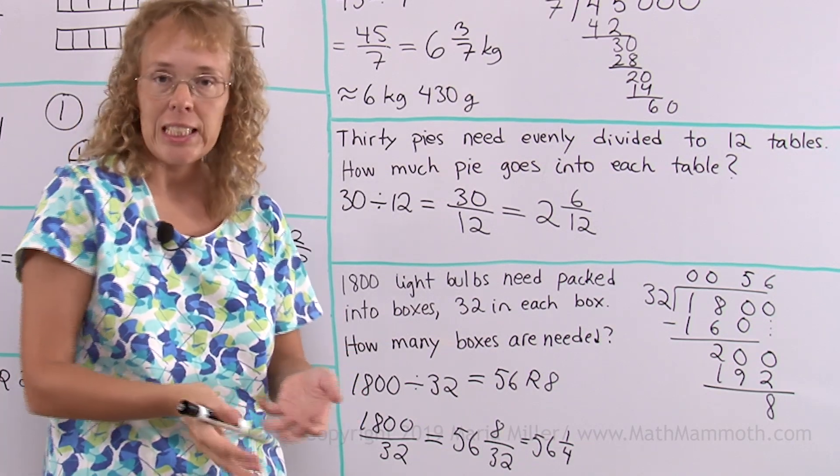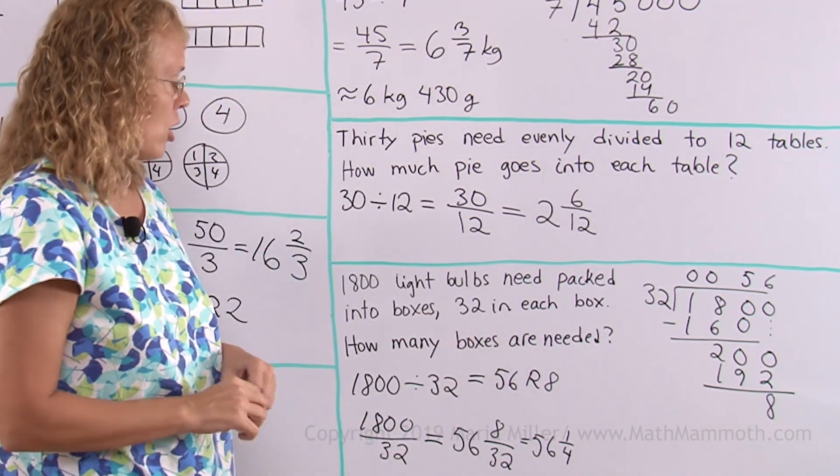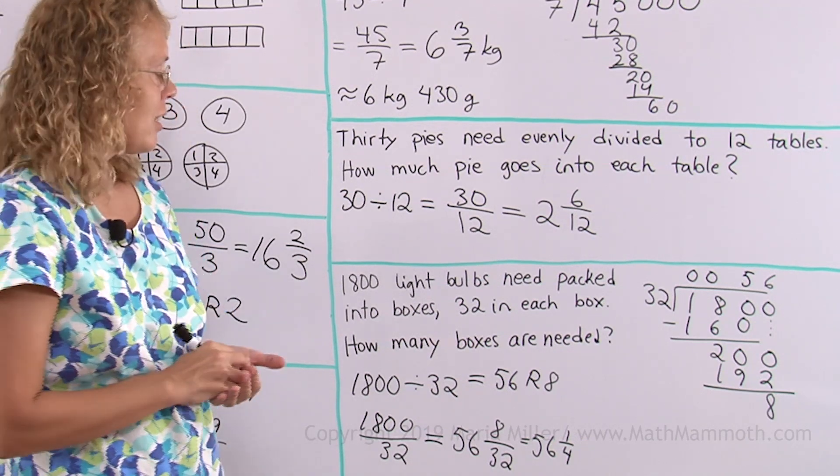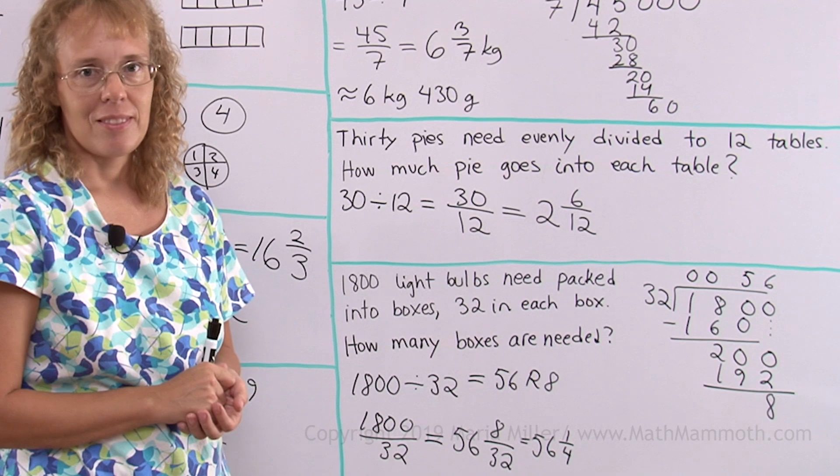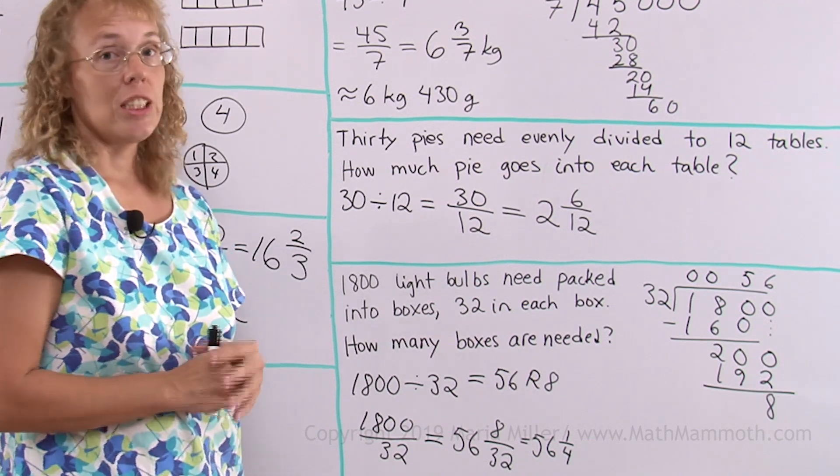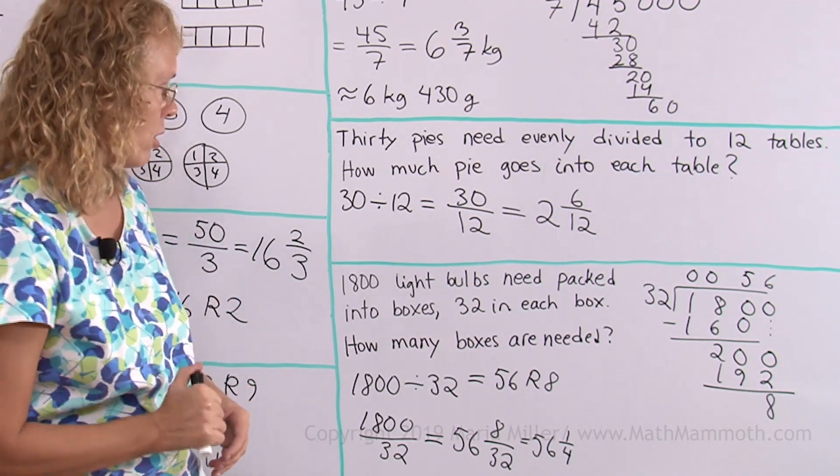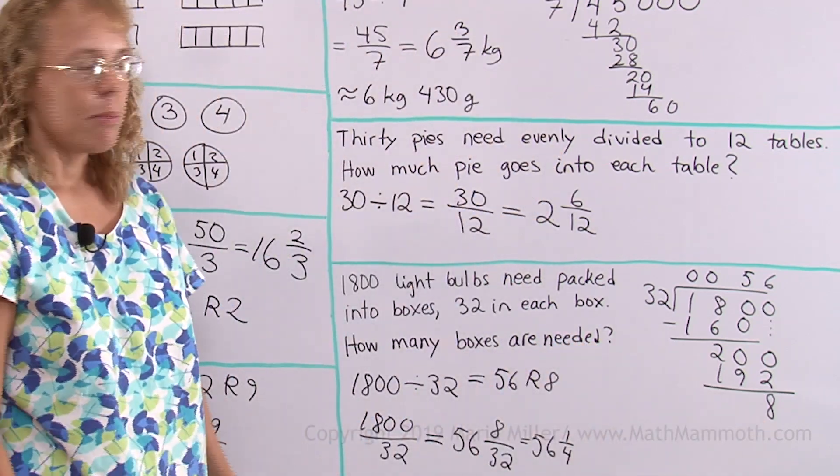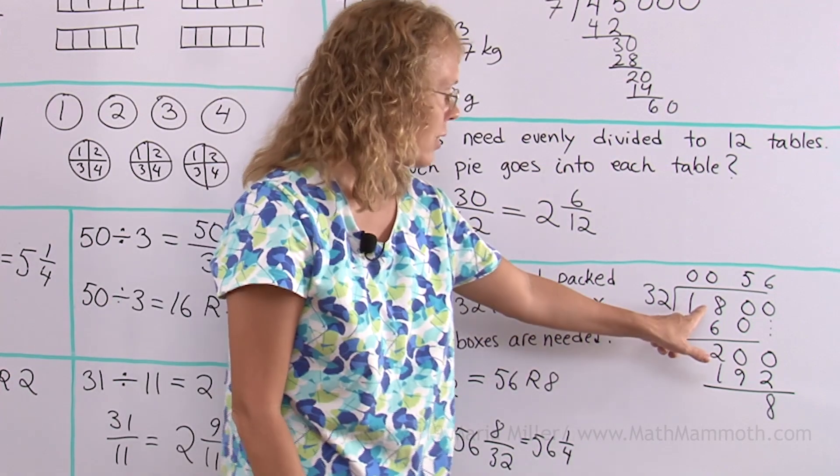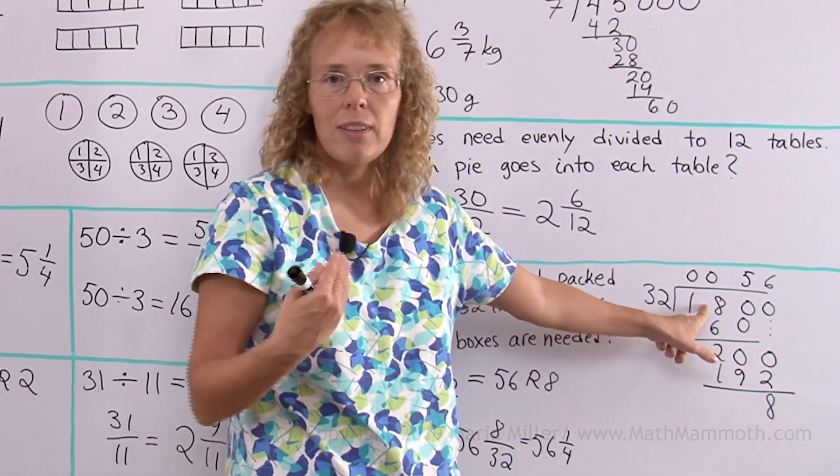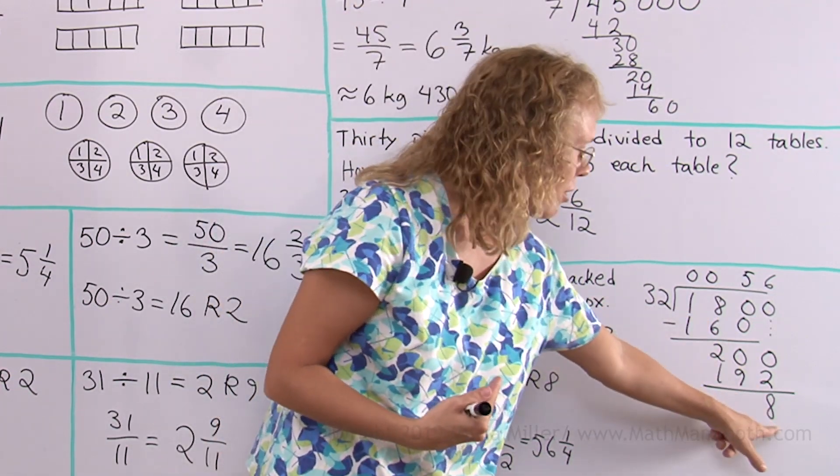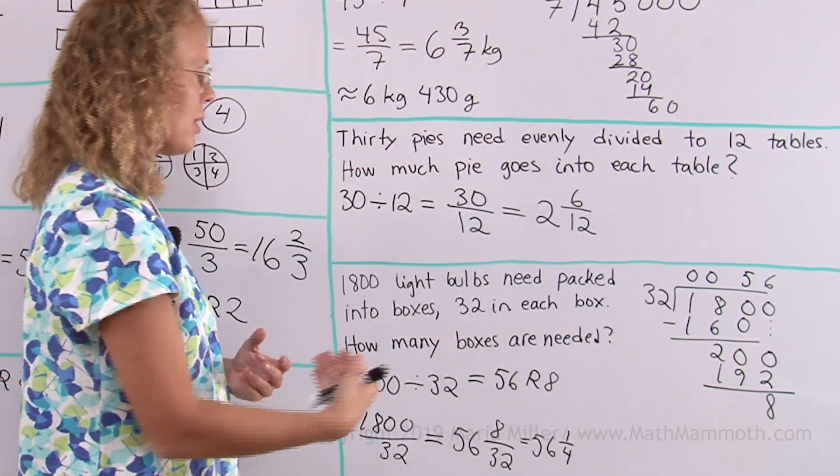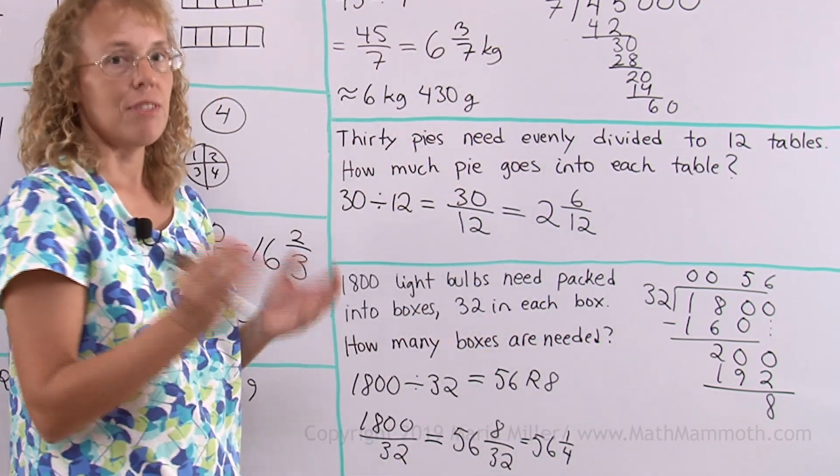So what shall we do? We shall either take 57 boxes, right? And the last box is not full. In the last box, there's going to be 8 light bulbs, because notice, this 1800 is the number of light bulbs, so the remainder you get here is also in light bulbs. So there's going to be 8 light bulbs in the last box and 57 boxes.